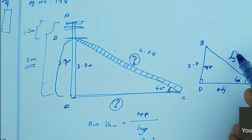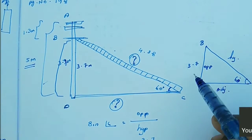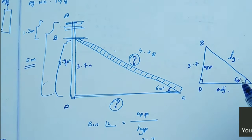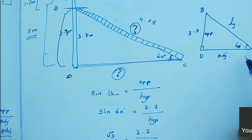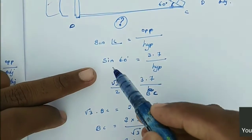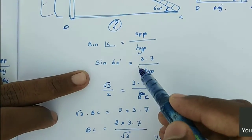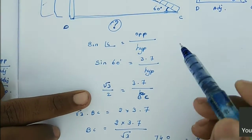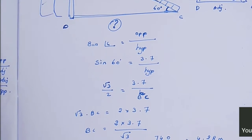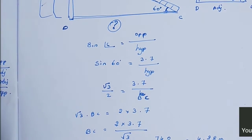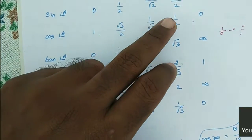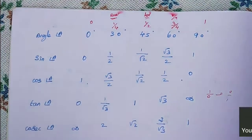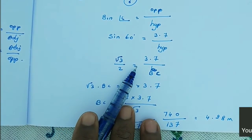Now we can find the hypotenuse. What is the relation between hypotenuse and opposite side? Sine and cosecant. So we can go with sine. Sine of angle C is equal to opposite by hypotenuse. Sine of angle C is 60 degrees, so sine 60 degrees is equal to 3.7 divided by BC. The value of sine 60 degrees from the table is root 3 by 2. So we can write: root 3 by 2 is equal to 3.7 divided by BC.